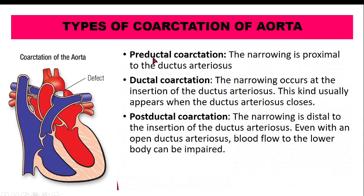There are three types: pre-ductal, ductal, and post-ductal. When we studied fetal circulation, we discussed ductus arteriosus — the duct between the pulmonary artery and aorta which normally closes soon after birth, taking about 15 hours to close. Ductal coarctation occurs at the insertion point of the ductus arteriosus.